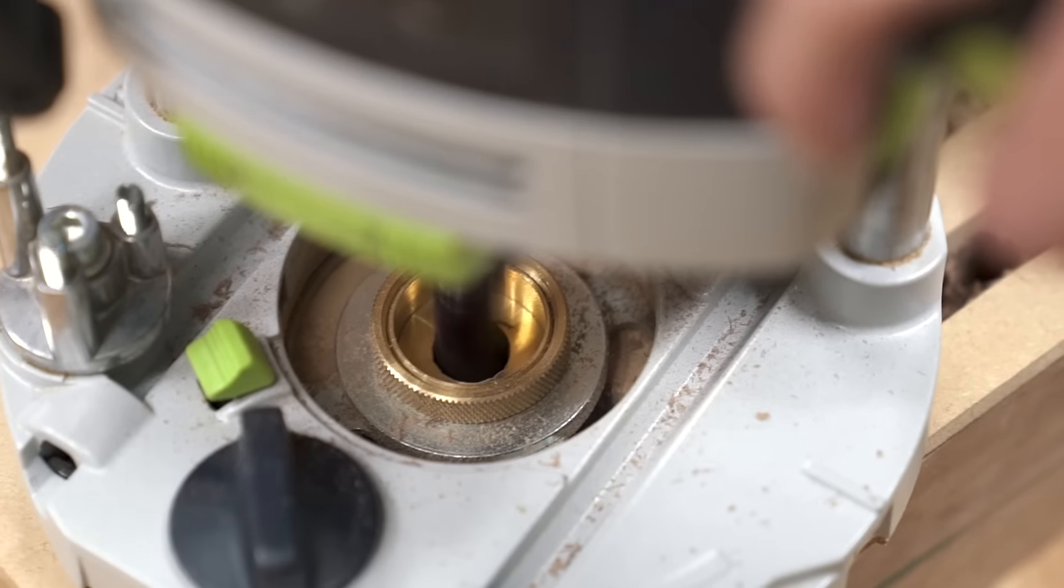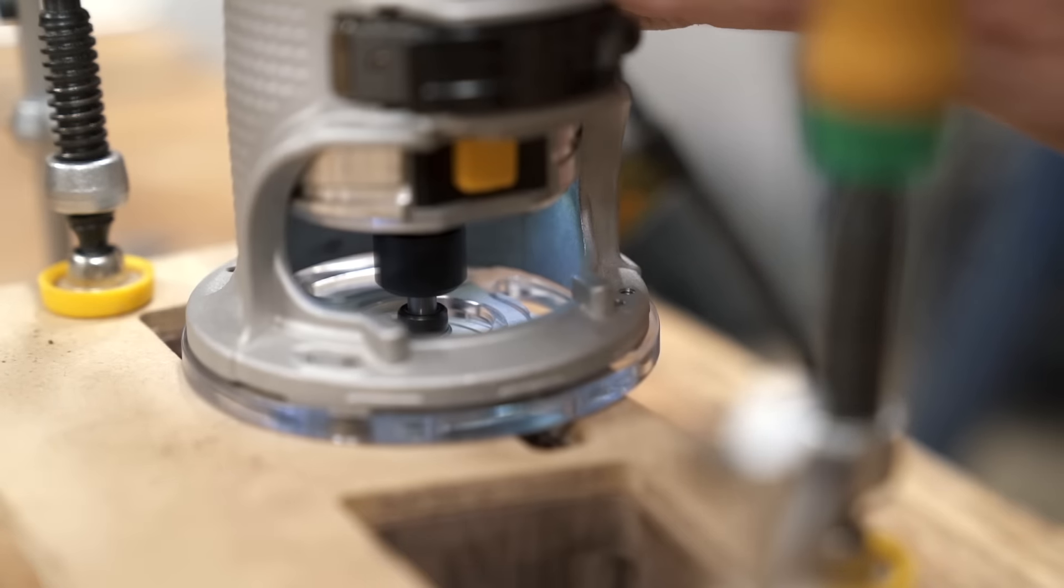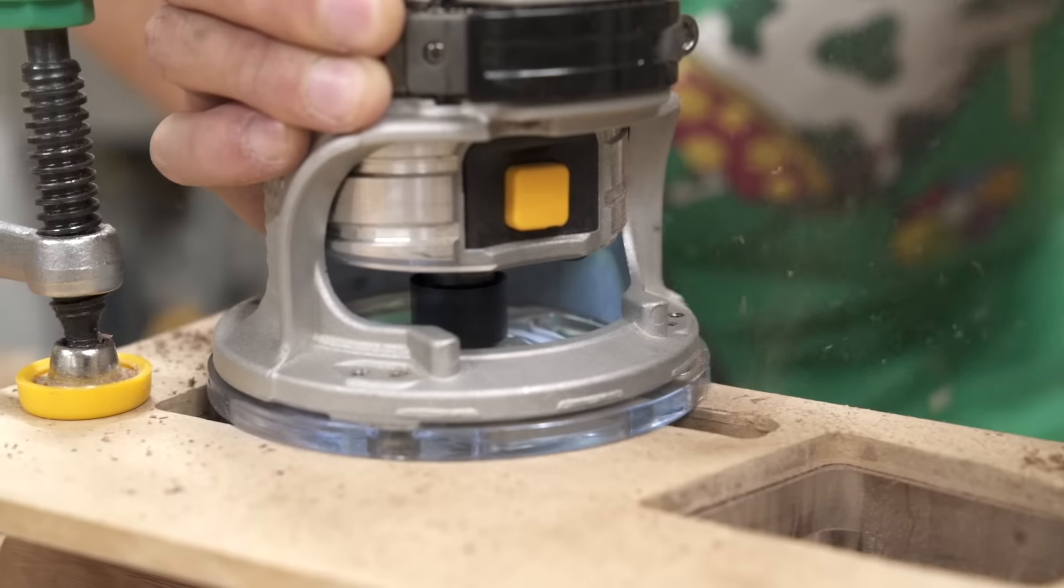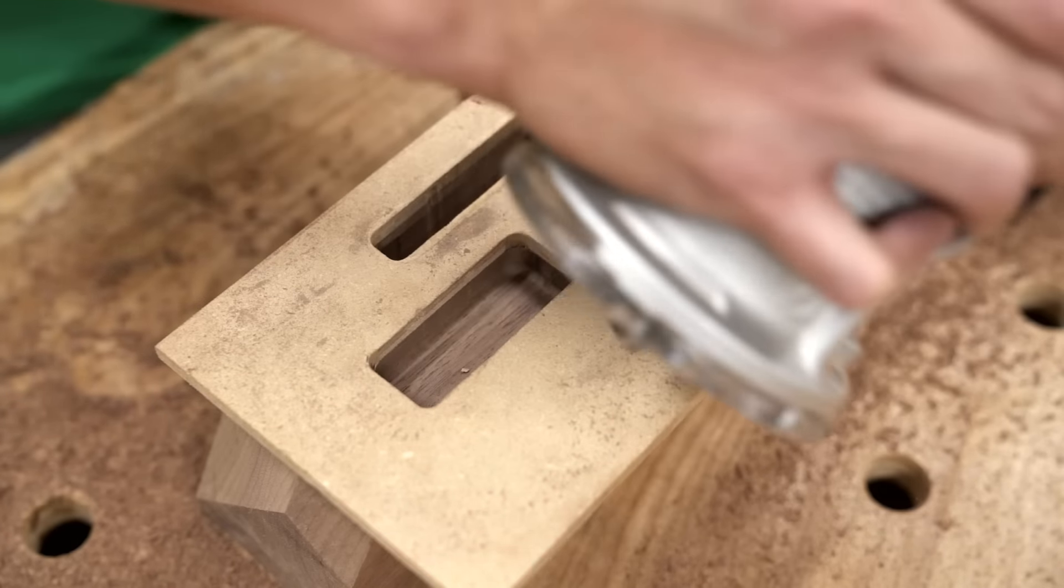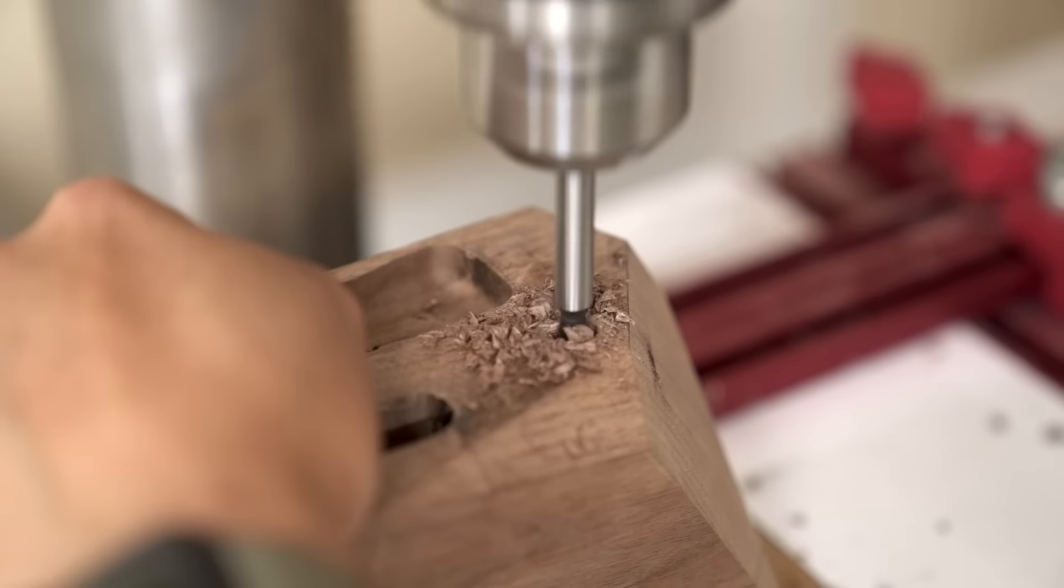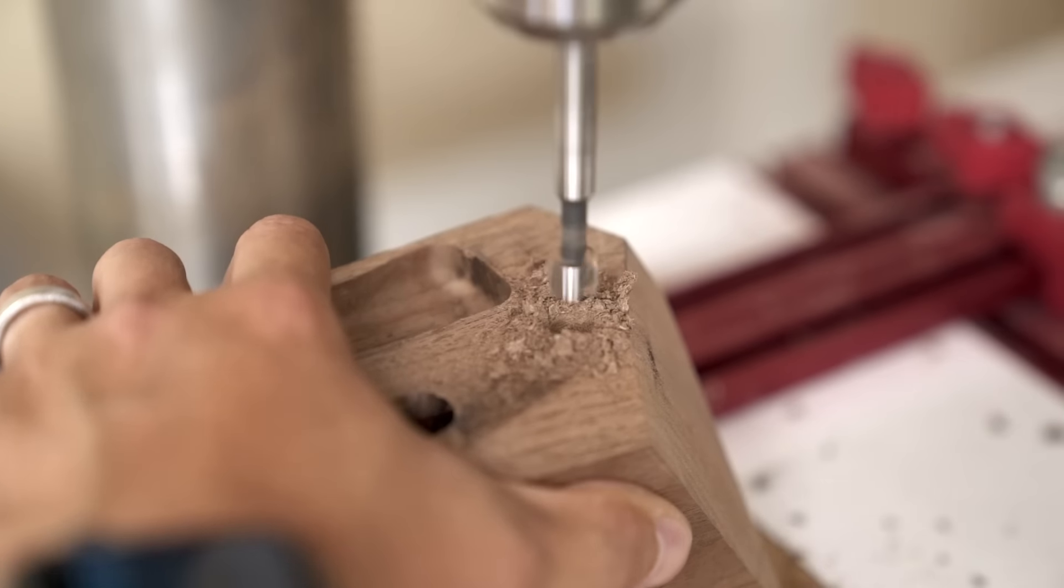Now I'm gonna switch over to the bowl and tray bit, to clean up those sharp corners left by the previous operation. Okay, pockets done, and now back at the drill press, let's cut a hole to store my apple pencil, and then make some slots for holding the cables.